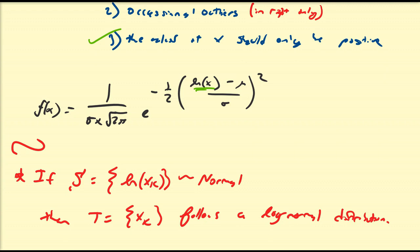So if you take a set of values and you take the natural log of all those numbers, and it looks to be bell-shaped — about 99% of the data falls within three standard deviations and all those other properties — then, if you take away that natural log, assuming that x_k are all positive, then the set of x_k follows a log normal distribution.